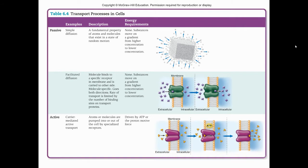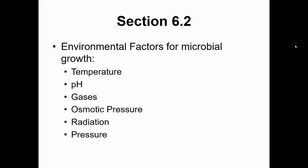Section 6.2 discusses growth factors and environmental factors — things other than nutrients. To separate nutrients from environmental factors, think: what would you eat versus where would you be comfortable? Environmental factors include temperature, pH, gas requirements (do you need oxygen? Is oxygen toxic?), osmotic pressure, radiation, and atmospheric pressure. If you want to grow bacteria in the lab, not all bacteria like the same conditions, so you need to know what conditions they prefer.